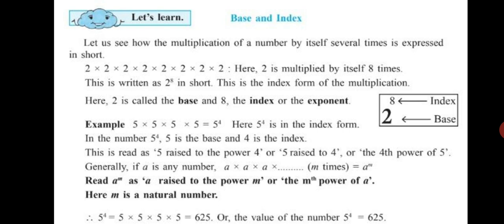This is called indices. Remember, 5 is the base and 4 is the index. You will not multiply base into index — instead, you multiply the base as many times as the index is shown. Base has to be multiplied by itself as many times as the index indicates.